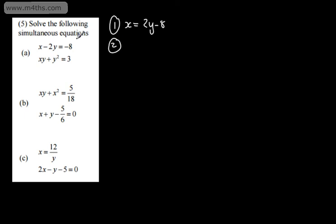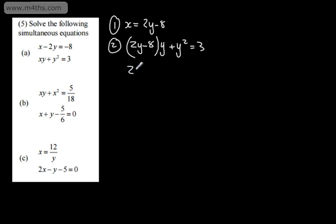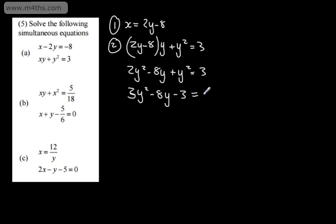That means in equation 2, substituting in for x, we've got 2y minus 8, multiplied by y, plus the existing y squared is equal to 3. This has now allowed me to eliminate x and form a quadratic equation in y. So we're going to have 2y squared minus 8y plus y squared is equal to 3. Tidying up, 2y squared plus y squared gives 3y squared minus 8y minus 3 is equal to 0. That looks like it's going to factor: 3y plus 1, and y minus 3, equals 0.